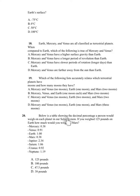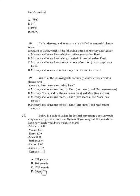Number 20. Below is a table showing the decimal percentage a person would weigh on each planet in the solar system. If you weighed 125 pounds on Earth, how much would you weigh on Mars? Mercury: 0.38, Venus: 0.91, Earth: 1.0, Mars: 0.38, Jupiter: 2.34, Saturn: 1.06, Uranus: 0.92, Neptune: 1.19. A. 125 pounds. B. 100 pounds. C. 47.5 pounds. D. 38 pounds.